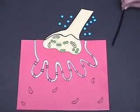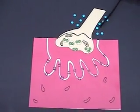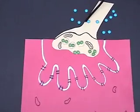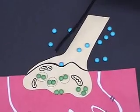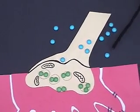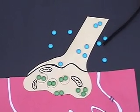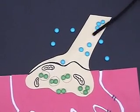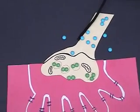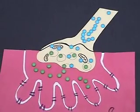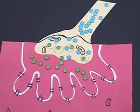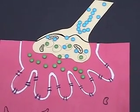The action potential arrives in the axon terminal, and this causes the calcium channels of the membrane to open, allowing calcium to move into the synaptic knob. The increase in calcium causes the synaptic vesicles, which are filled with acetylcholine, to be fused with the membrane.